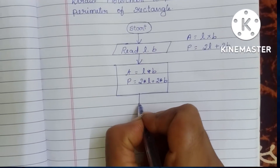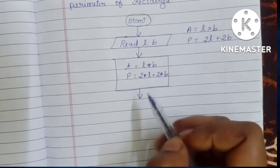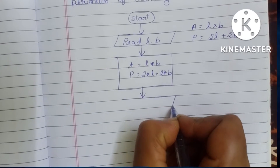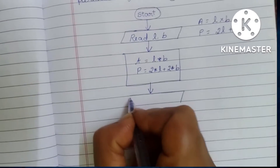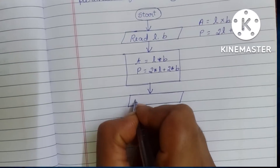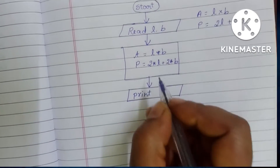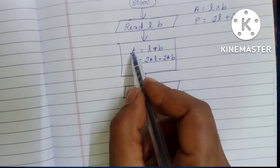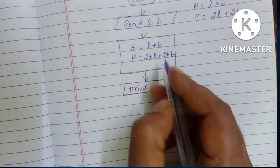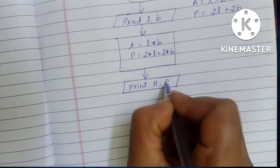Next we have to display the output. Input and output are written within a parallelogram, so draw a parallelogram. Print the output — the output here is Area (A) and Perimeter (P) — so write: Print A, P.